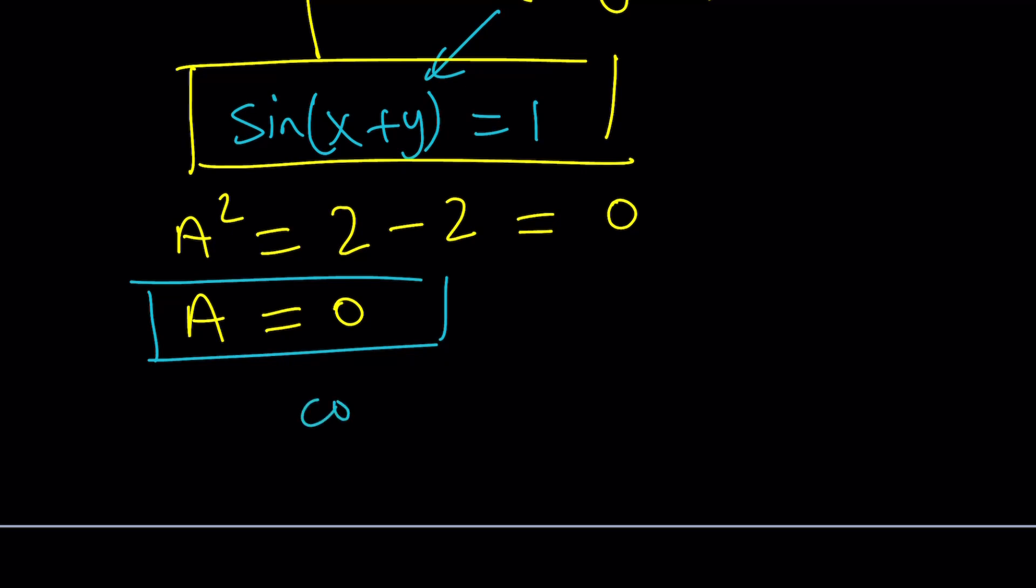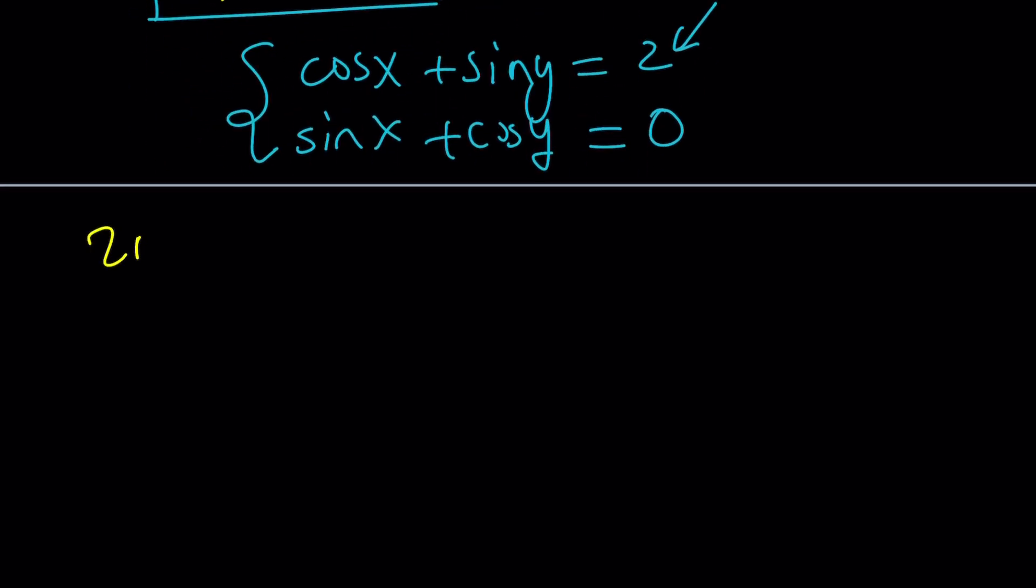Again, the question was cosine x plus sine y equals 2, and we were supposed to evaluate sine x plus cosine y. We called it something, and we found 0. So if you go ahead and check out that system, you'll see that it is consistent. By the way, you can also think about if this is not equal to 2 but something else, can you find the value of the second expression, or is there going to be more than one solution?